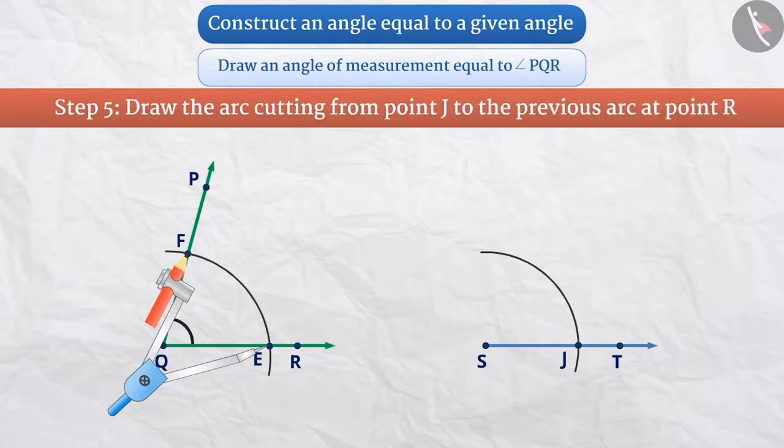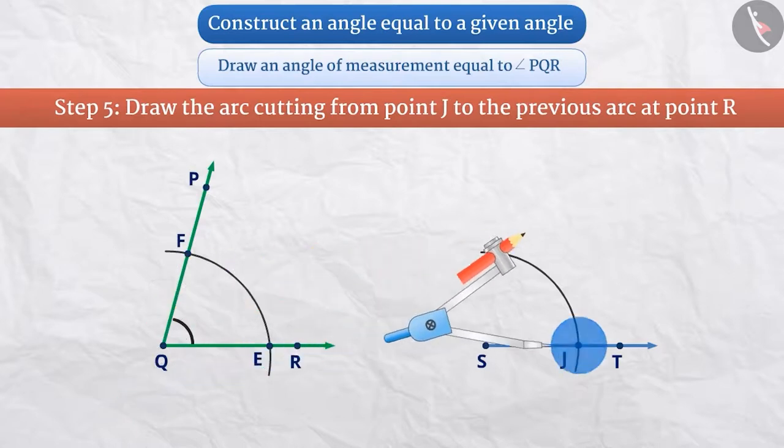Step 5: Without changing the distance of the compass, place its pointed end at point J and draw an arc cutting the previous arc at point R.